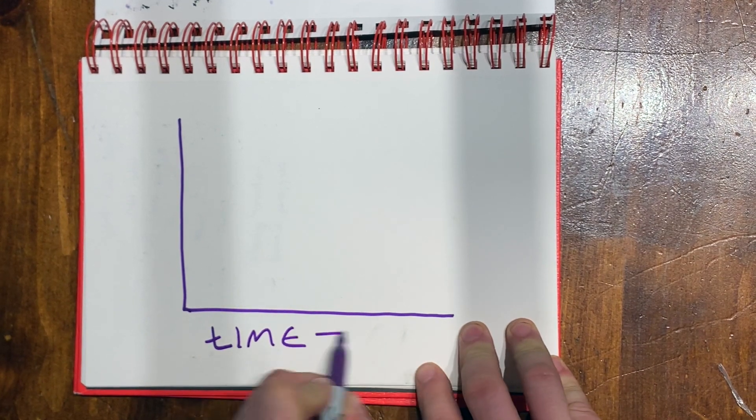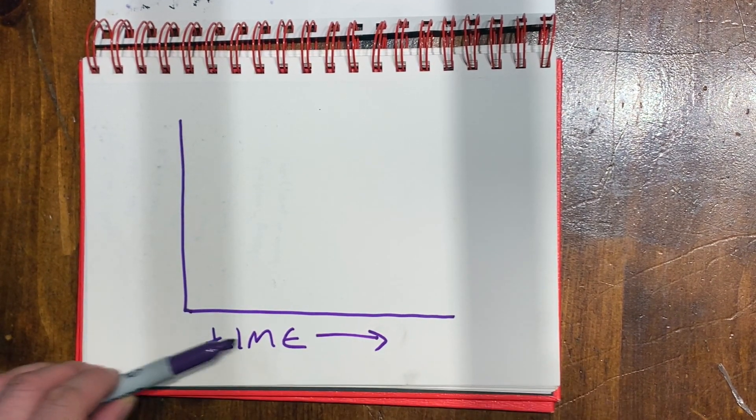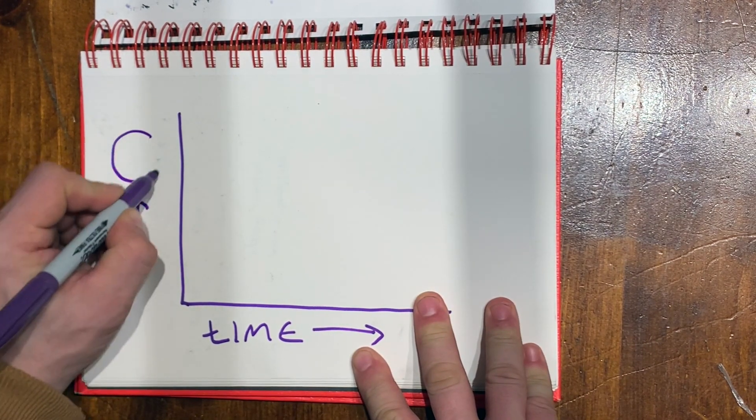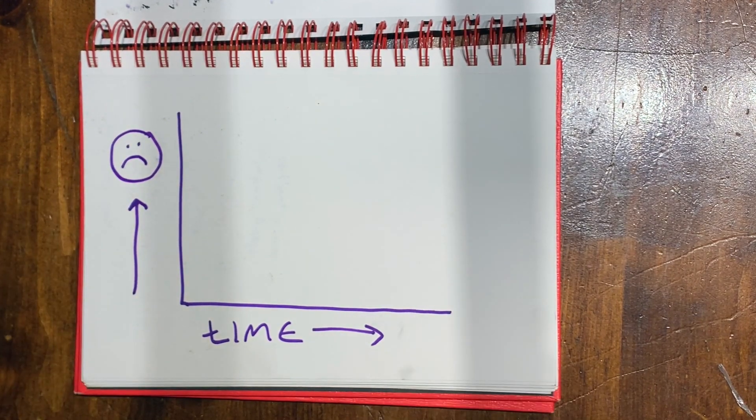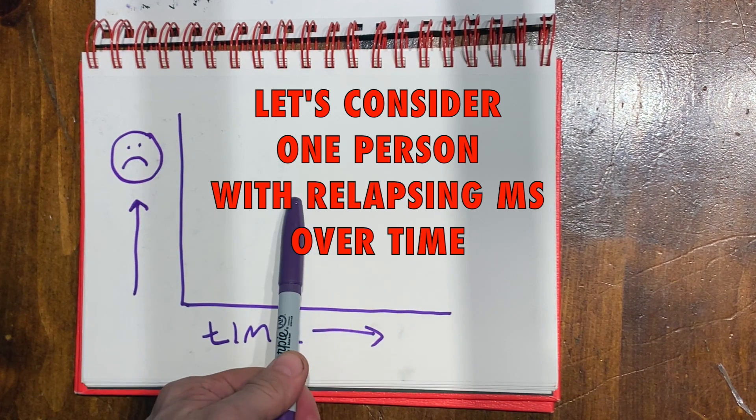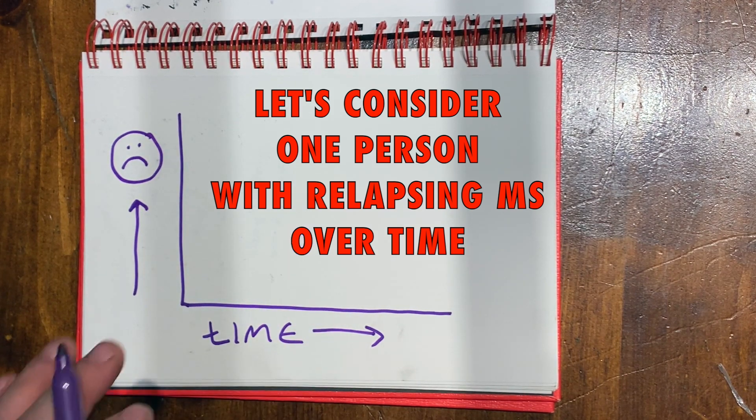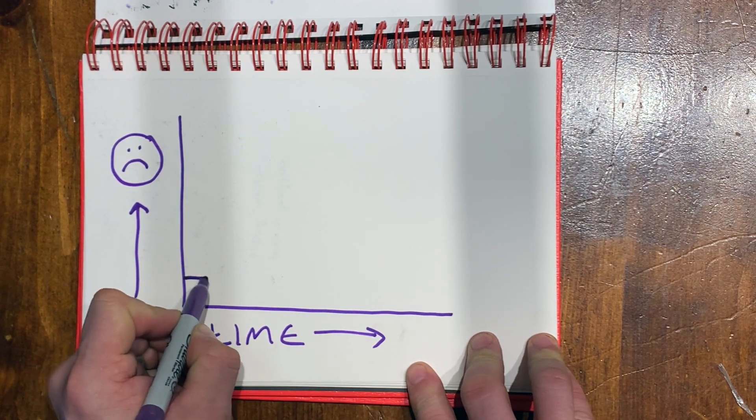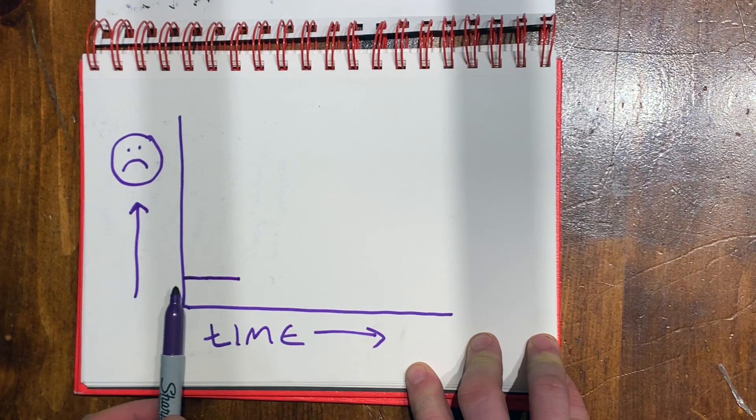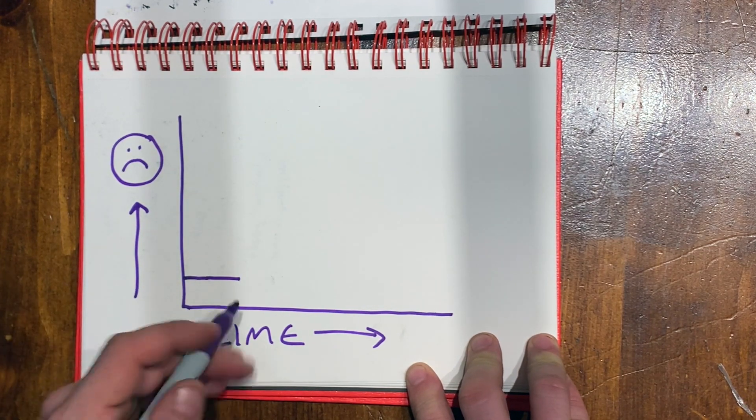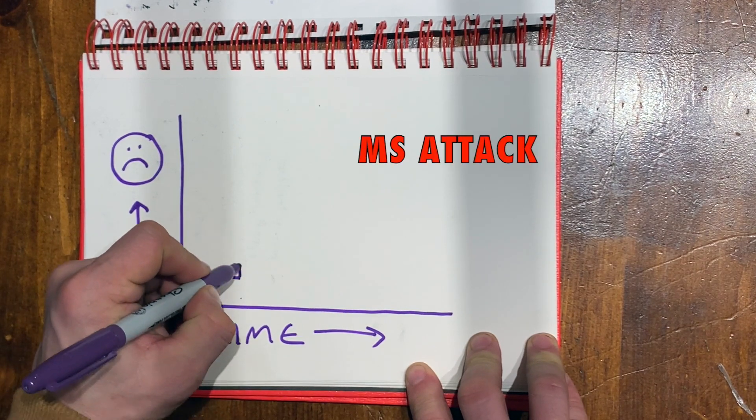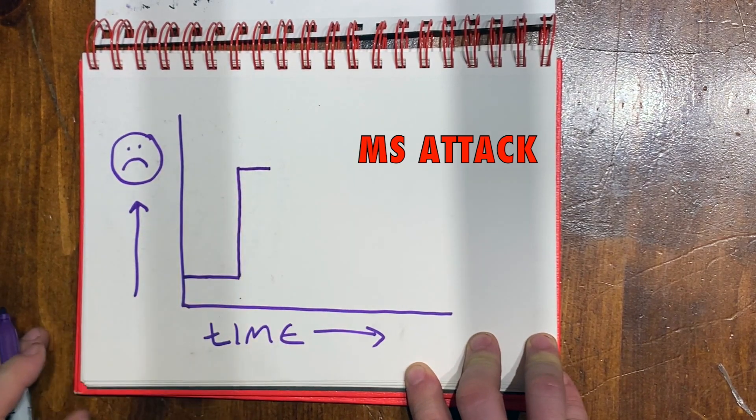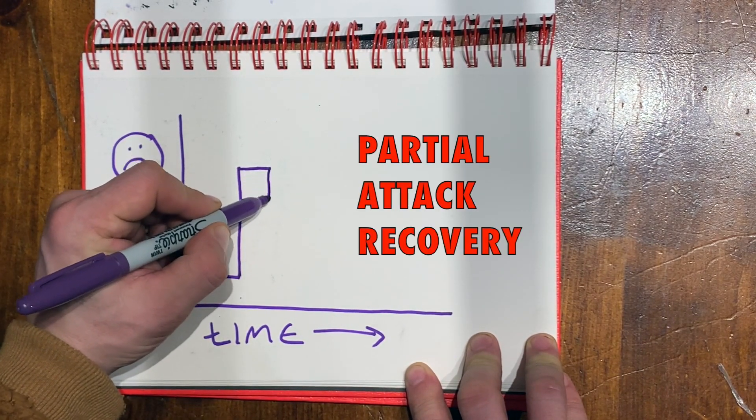I'm going to explain the concept using this simple graph. As you go from left to right, you get older. As you climb up on the graph, you become more disabled, so going up is bad. And so we're going to represent one human being's experience with multiple sclerosis. Here, they've accrued no disability. They're moving forward in time, but they're not going up. And then they have an MS attack where they lose vision in their one eye.